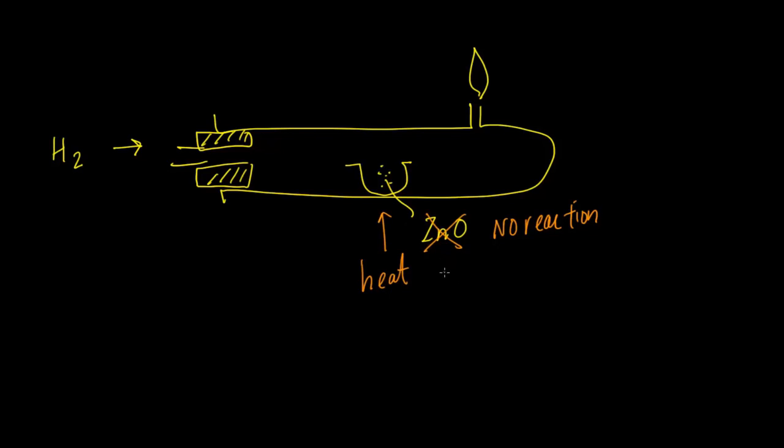We try again, this time we put iron oxide, and now a reaction occurs. The reddish brown iron oxide slowly turns to shiny gray as hydrogen gas flows through it. This is because iron oxide has been reduced to iron by hydrogen.